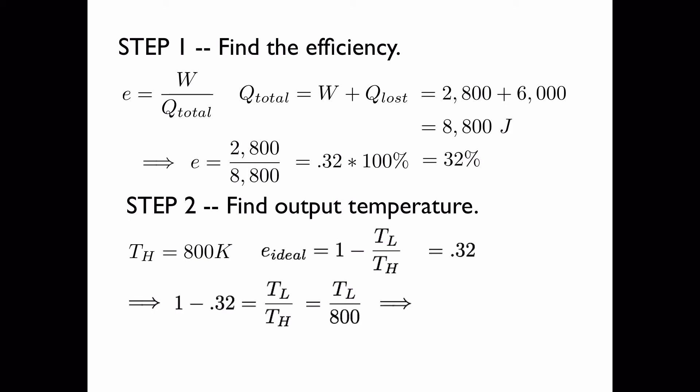And this implies, if I multiply both sides by 800, I have this equation, because 1 minus 0.32 is 0.68. Working this out gives me the temperature of the low reservoir to be 540 Kelvin.